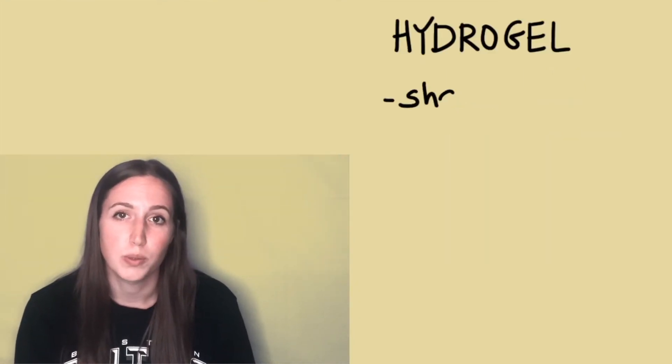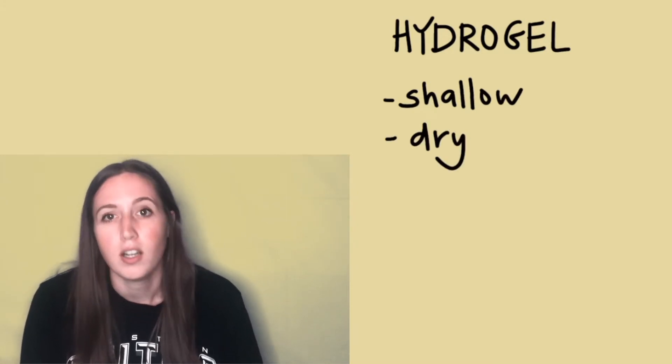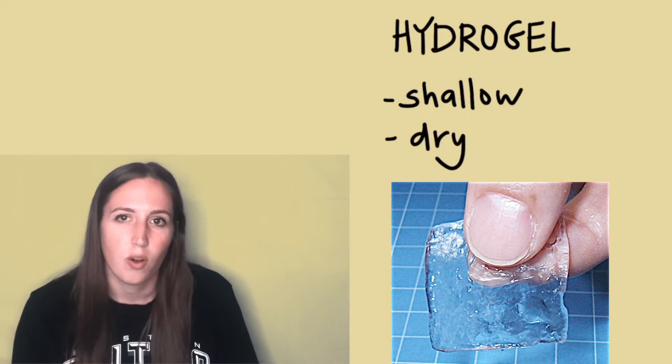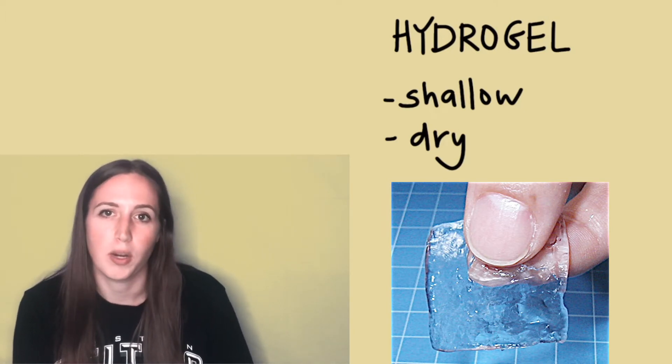Hydrogels are for dry, shallow wounds. They're made of a gel-forming polymer and water, and can look like a gelatin or a jelly sheet themselves, and can often decrease pain and pressure on the wound. They're also pretty occlusive, and so they retain moisture very well.